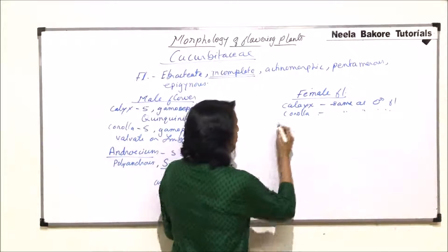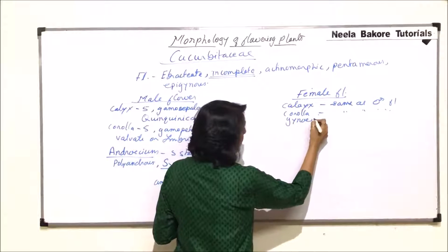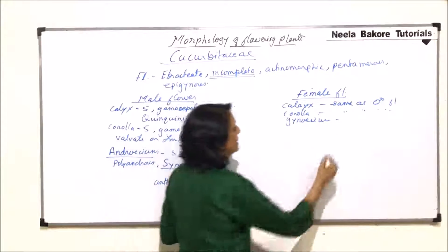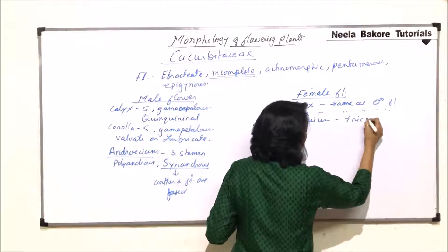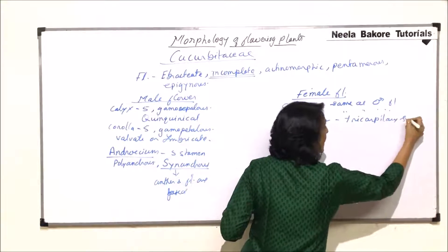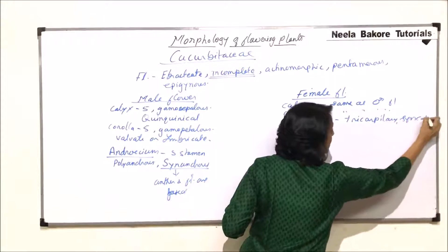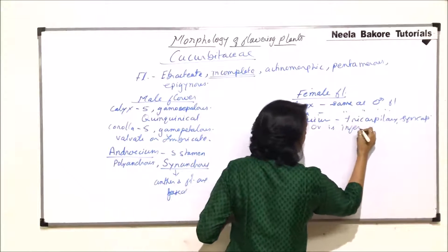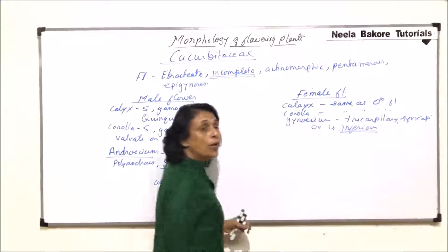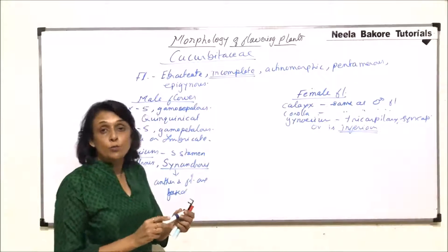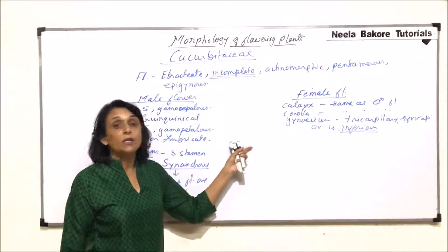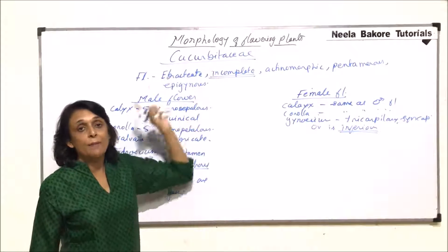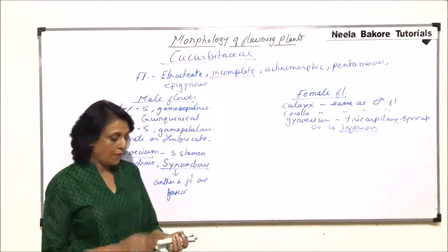In the female flower, the androecium is absent and the gynoecium is present. It is tricarpellary and syncarpous, and the ovary is inferior. Only two families we have discussed have an inferior ovary: Cucurbitaceae and Asteraceae.